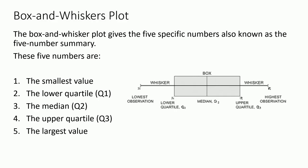Now we will go on with the Box and Whiskers Plot. The box and whiskers plot gives 5 specific numbers, so it is also known as the 5-number summary. These 5 numbers are: the smallest value or lowest observation, the lower quartile Q1, the median Q2, the upper quartile Q3, and the highest observation. The lower extreme of the box refers to Q1, the upper extreme to Q3, and inside the box we have the median Q2.